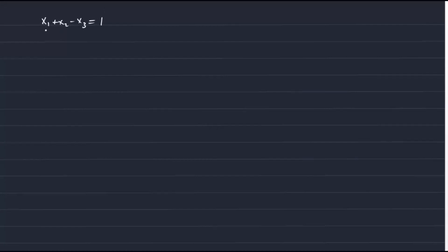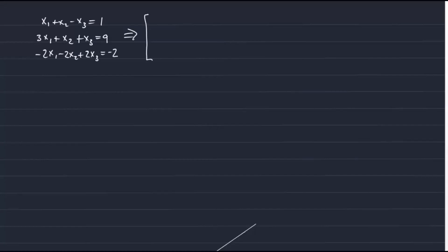Let's look at another system: x1 plus x2 minus x3 equals 1; 3x1 plus x2 plus x3 equals 9; and minus 2x1 minus 2x2 plus 2x3 equals minus 2. This gives the matrix: row 1 is 1, 1, minus 1, 1; row 2 is 3, 1, 1, 9; and row 3 is minus 2, minus 2, 2, minus 2.